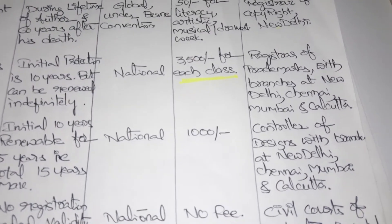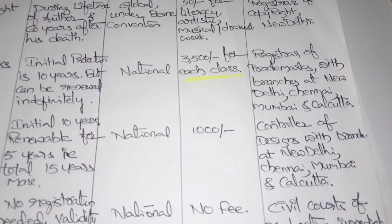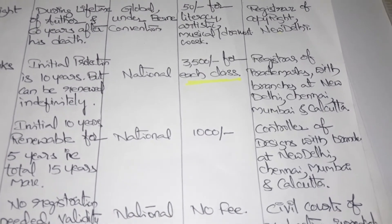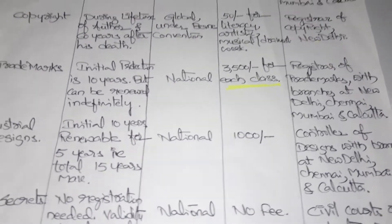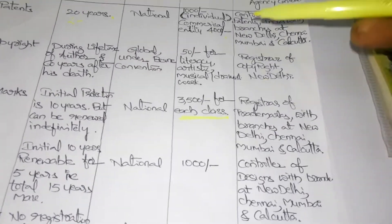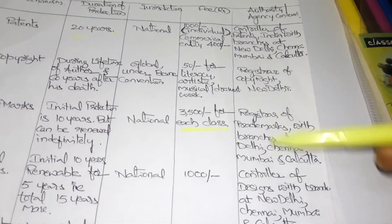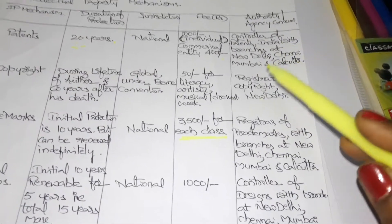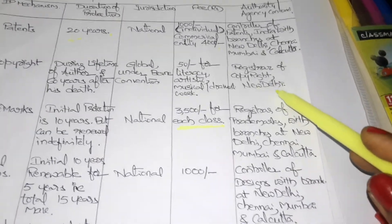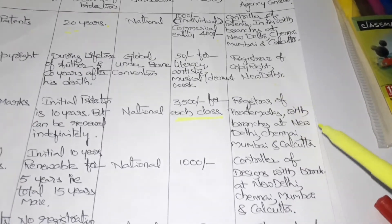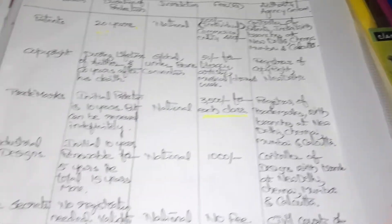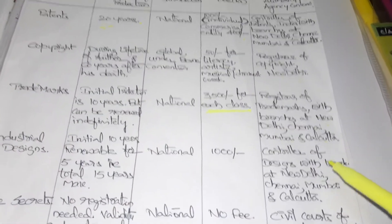The authority for industrial designs is the Controller of Designs, with branches in New Delhi, Chennai, Mumbai, and Kolkata. As a memory tip, all the major IP offices are located in these same four cities: New Delhi, Chennai, Mumbai, and Kolkata.